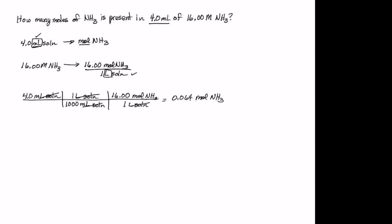1 liter of solution from the metric prefix conversion factor is an exact number and therefore has an unlimited number of significant digits. 1,000 milliliters from the metric prefix system is also an exact number with unlimited significant digits. 16.00 moles has four significant digits because zeros at the end after the decimal are significant. The 1 liter of solution in the molarity is also exact. So you have two significant digits times unlimited, divided by unlimited, times four significant digits, divided by unlimited. The measurement with the fewest has 2 significant digits, and therefore you record your answer as 0.064 moles of ammonia.